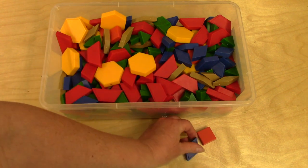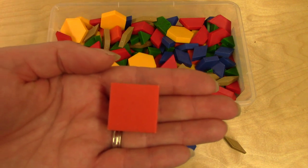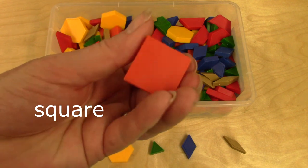We only have one more shape left. It's our little orange one. Do you know what it's called? Yes, it is a square.